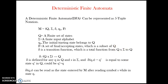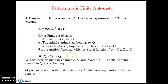Delta is the transition function, which can be defined as Q cross-product sigma to Q. For example, if the finite set of states Q contains Q0 and Q1, and the input alphabet contains a and b, then applying Cartesian product gives: Q0 upon a, Q1 upon a, Q0 upon b, and Q1 upon b. The result is a state in Q, so delta is defined as Q × sigma → Q.